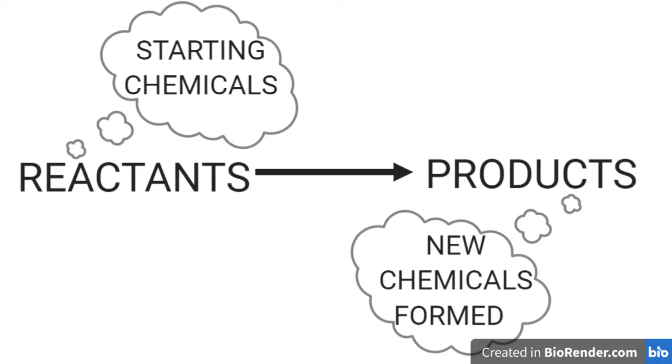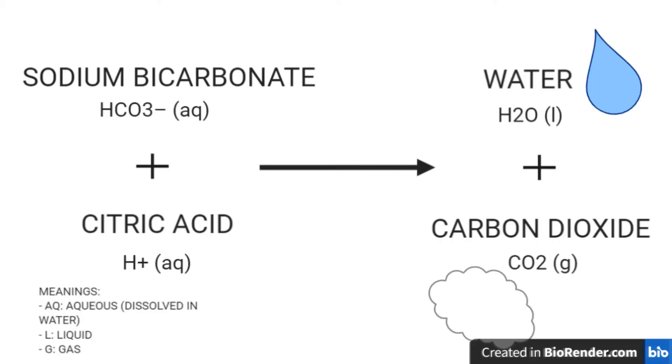In every chemical reaction, there are reactants and products. The reactants are the starting chemicals in the reaction and the products are the chemicals that formed after the reaction. In our experiment, the reactants sodium bicarbonate and citric acid are combined to produce water and carbon dioxide.